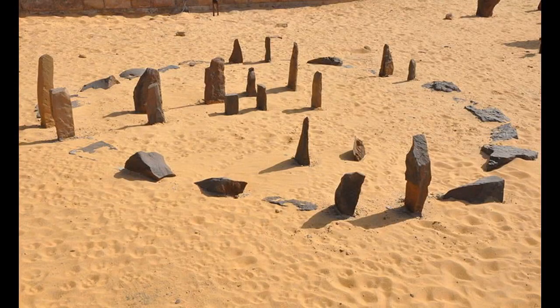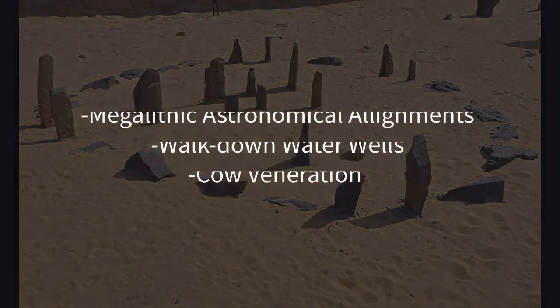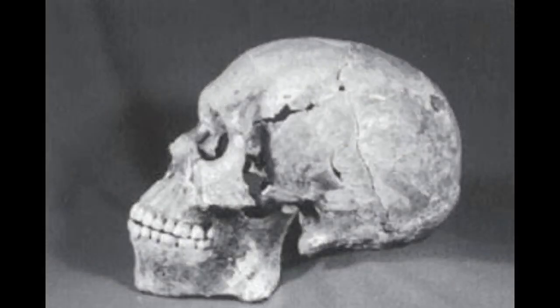There is strong supporting evidence that Nile Valley civilization started in the south of Egypt. For example, at Nabta Playa, an ancient site from around 6,000 years ago, there are megalithic astronomical alignments, walk-down water wells, and signs of cow veneration — foreshadowing the deified cow of ancient Egypt. It is also worth noting that the inhabitants of Nabta Playa were black African.